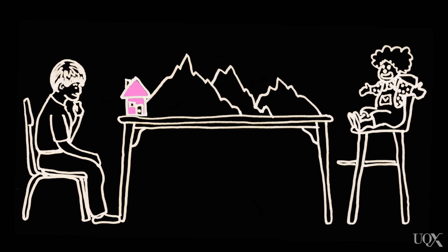If the child understands that the puppet can't see what they can see, then the child would say no, the puppet does not know what colour the house is. If the child thinks everything they see is what the puppet sees, then they would say: of course the puppet knows, it's a pink house.